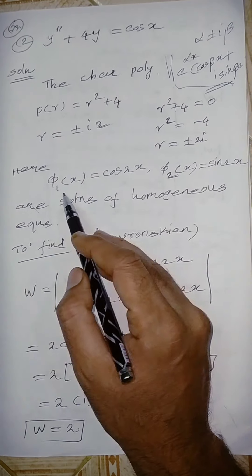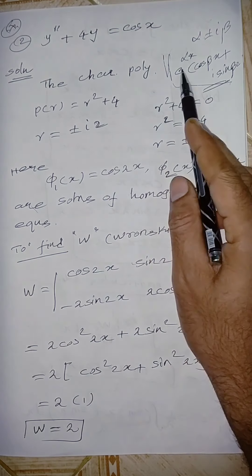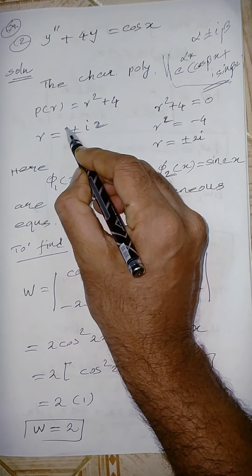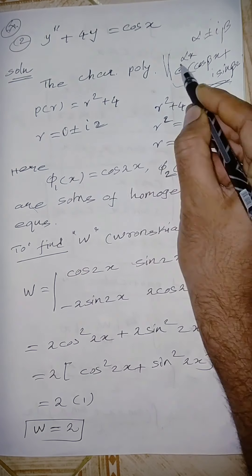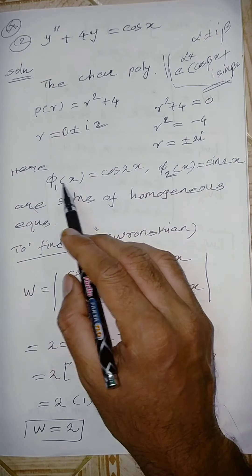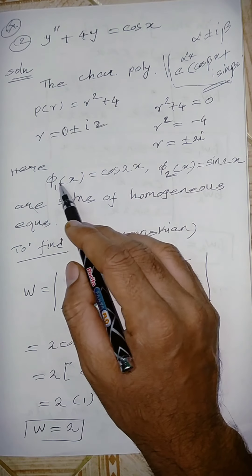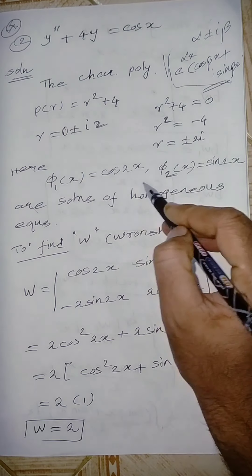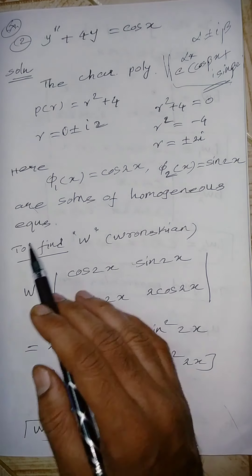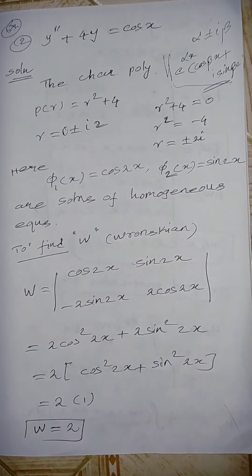From the complex roots with α = 0 and β = 2, we get e^(0)·(cos 2x + i sin 2x). Taking real and imaginary parts, the two homogeneous solutions are ψ₁(x) = cos 2x and ψ₂(x) = sin 2x.